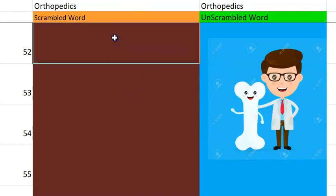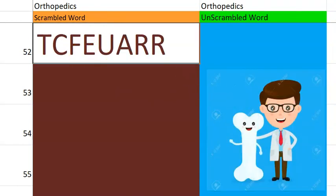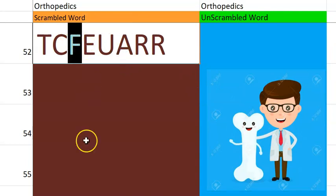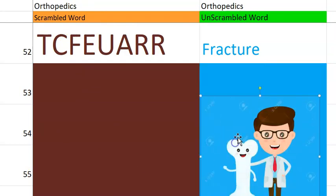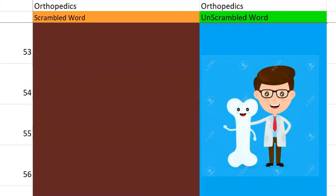Let's try the 52nd one. It starts with F — all about orthopedics. Fracture. How do you define fracture in orthopedics? It's a crack or discontinuity in the bone.